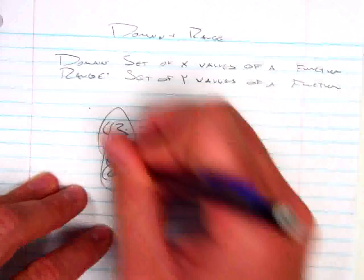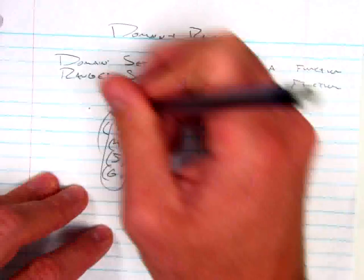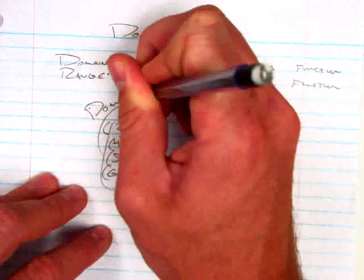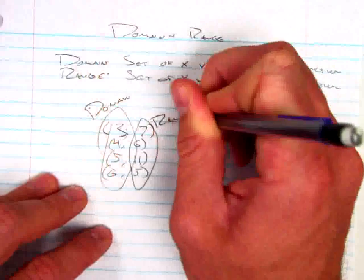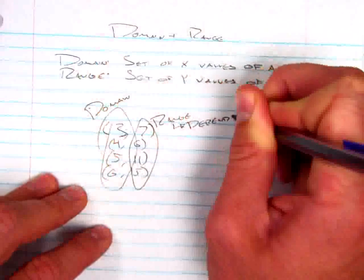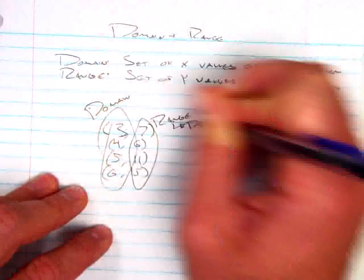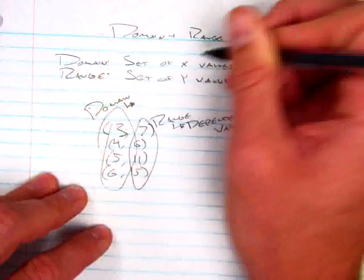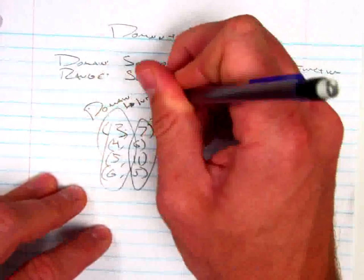In a nutshell, my domain is that group of numbers, and my range is that group of numbers. The domain is all the x values, the range is all the y values. Or instead of y values, you might call them the dependent variables, and you might call the domain all of your independent variables.